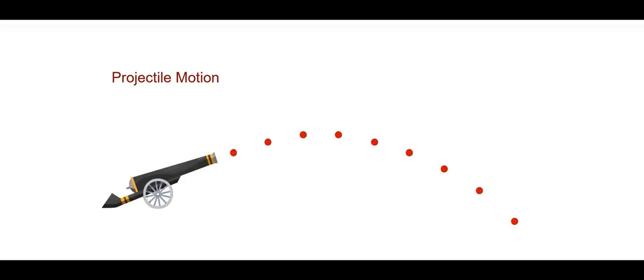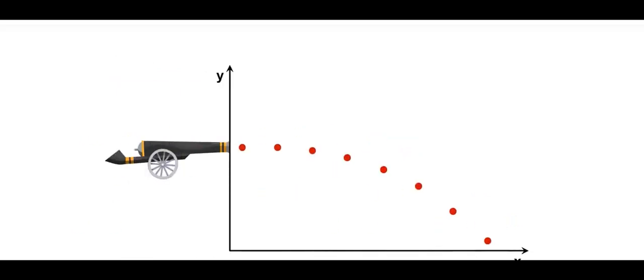The object moves in both directions—vertical and horizontal. We can represent it in the x and y axis.